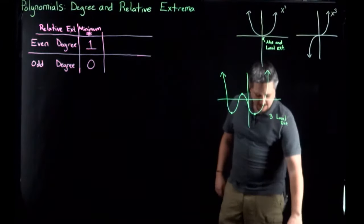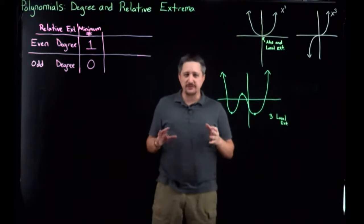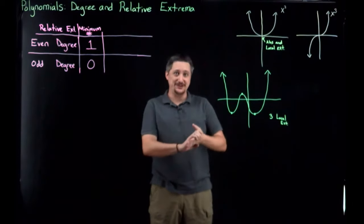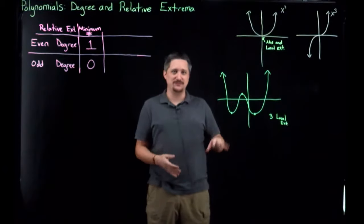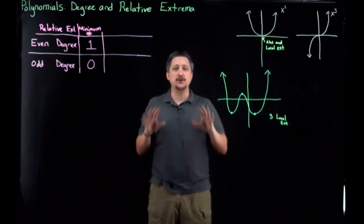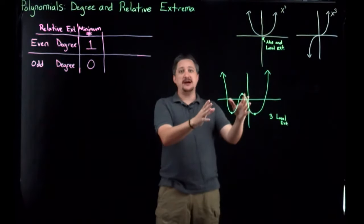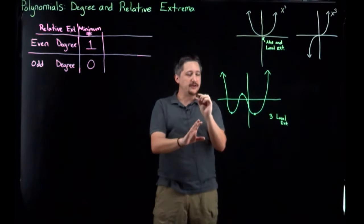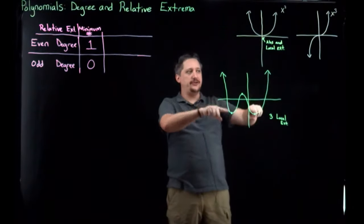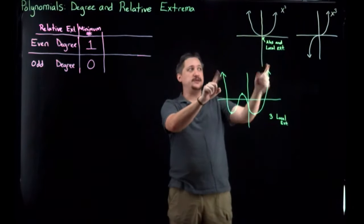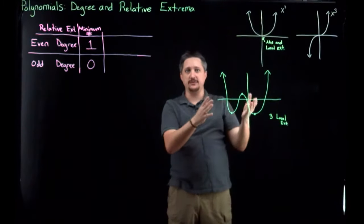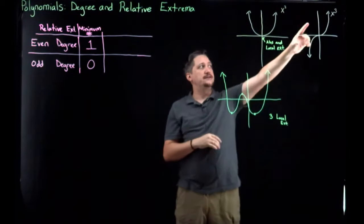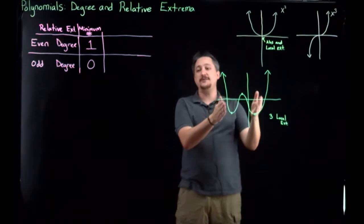I want to make a point very clear: just having a graph, I know really almost nothing about the degree of this polynomial. I know a little bit — for example, both arrows are going up, so the end-term behavior tells me it's an even degree. That's what we talked about in the last video: if they're both going the same direction, it's an even degree; if they're going opposite directions, it's an odd degree. So I know this has to be an even degree.